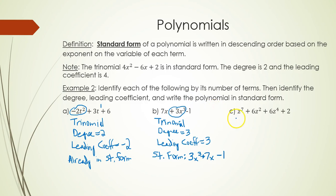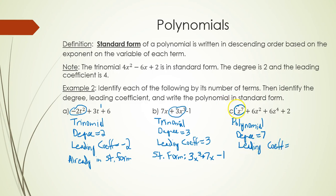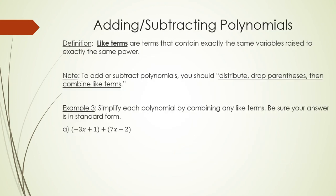Part c has four terms, so it's not a monomial, binomial, or trinomial — we just say it is a polynomial. The highest power term is z to the seventh, so the degree is seven. When there's nothing in front of a variable, it's like saying there's a one there, so the leading coefficient is one. Standard form: z to the seventh first, then plus 6z to the fourth, plus 6z squared, then plus two.